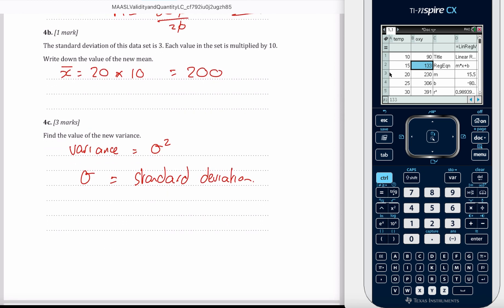We're told in the question that the standard deviation is 3. But what we've done is we've got 10 times that, which gives us 30. So that's the standard deviation of the new data set. But then we need to square that to give us 300 squared, which is 900. So the variance is 900.